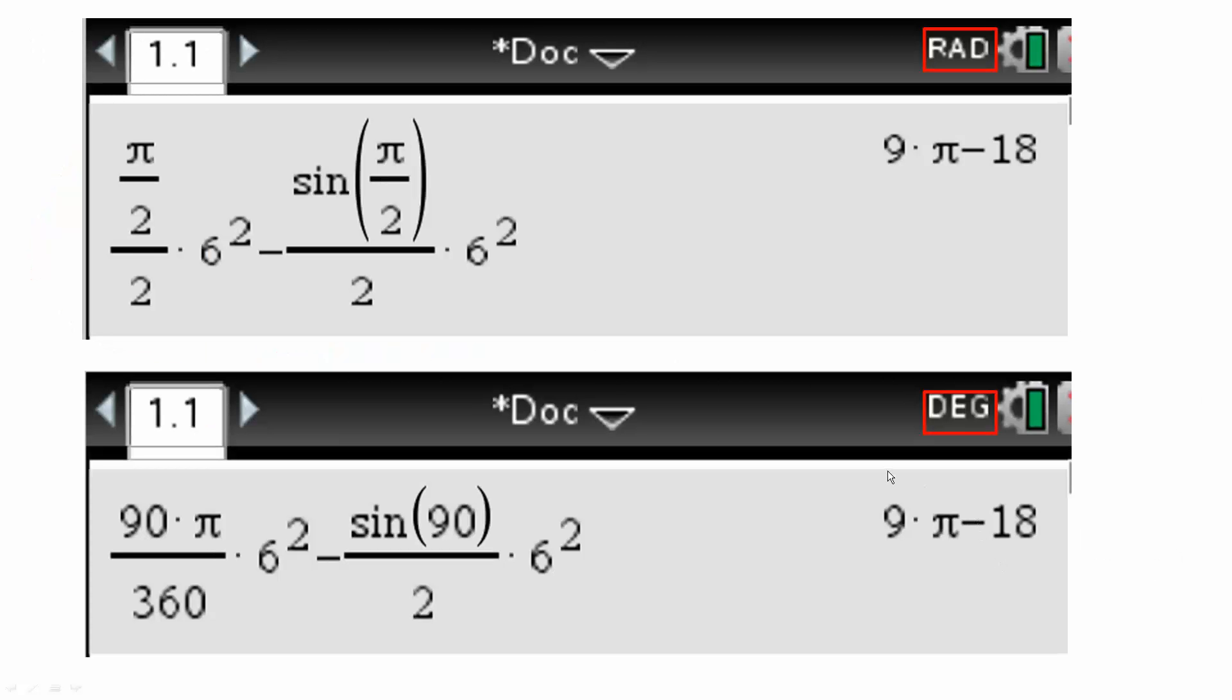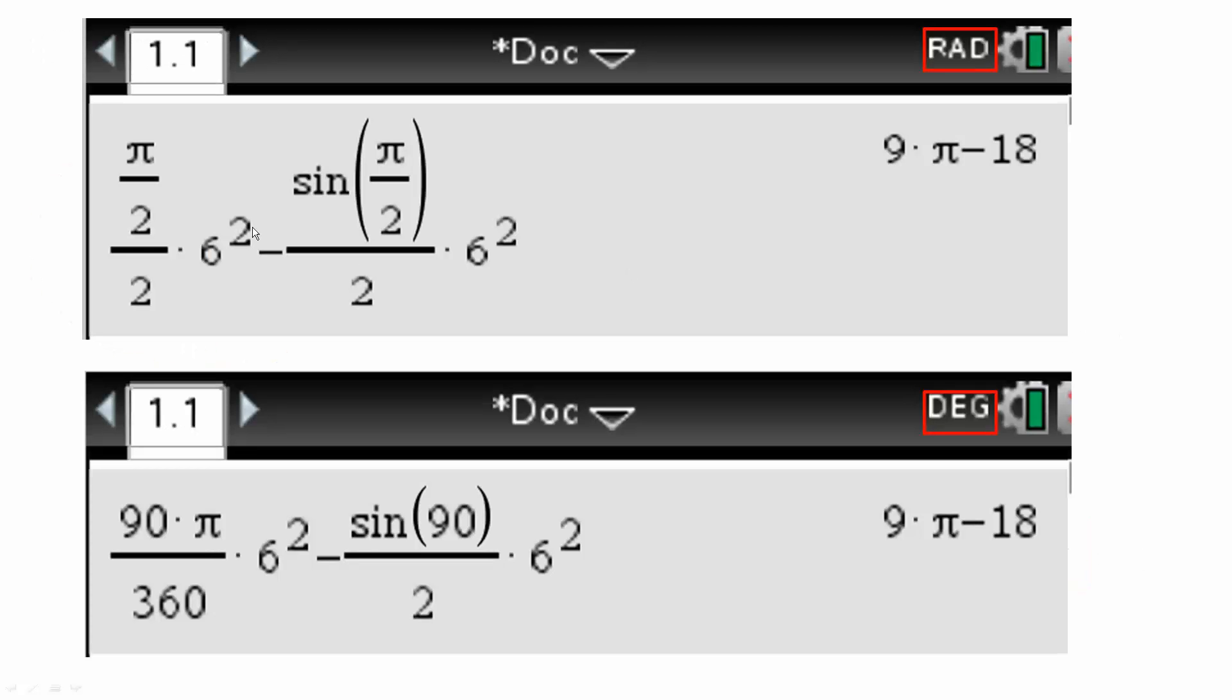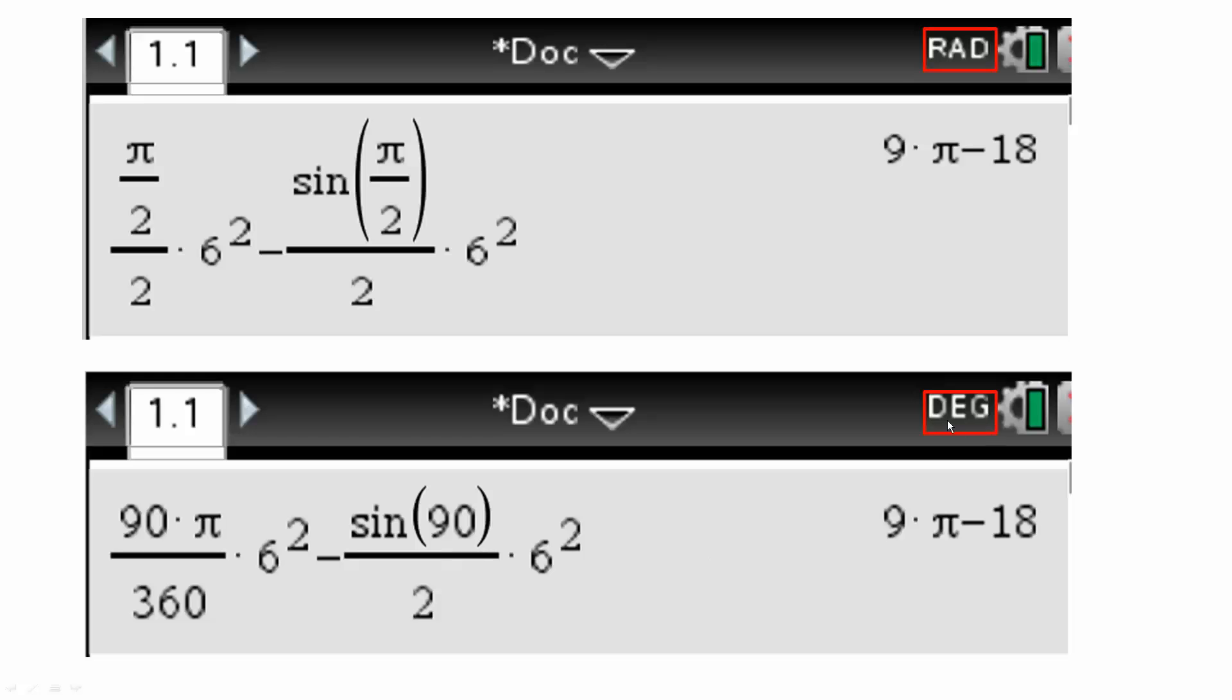Now it's very important. When you use a calculator, for radians, you need to go in radians mode. And for degree, you need to go in degree mode. If you do that, then you will get the correct answer. So I just simply copied this, put it here, went with radians, and I get 9 pi minus 18. I simply went with this, copied it, went with degrees, use a calculator, you get 9 pi minus 18. And that's all you need to do for this problem.